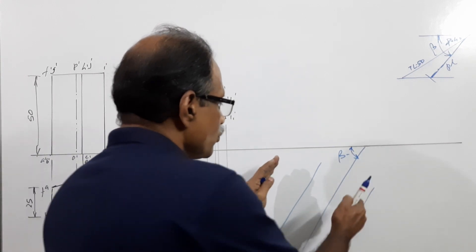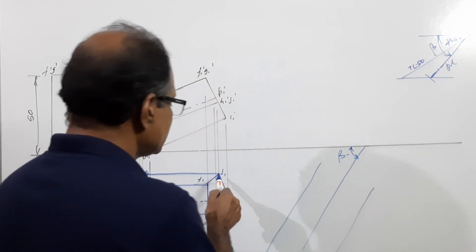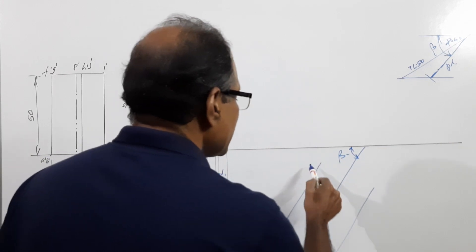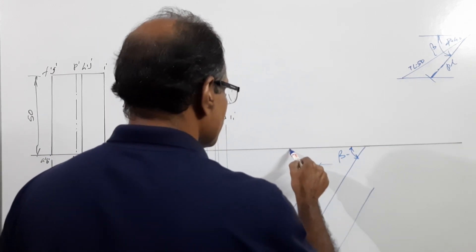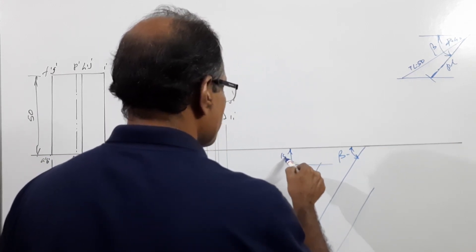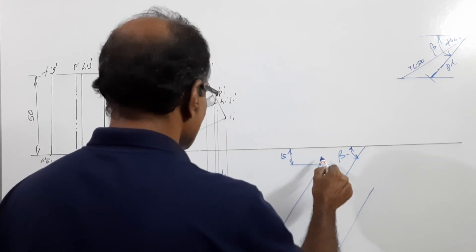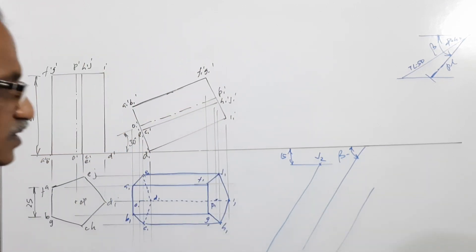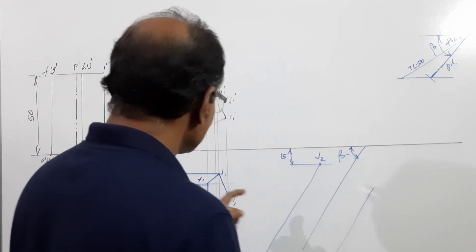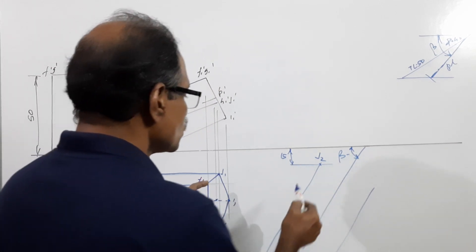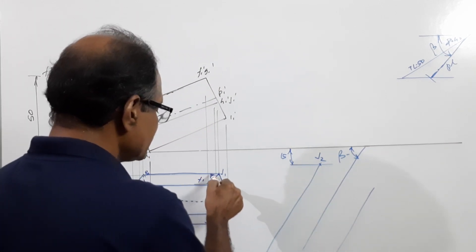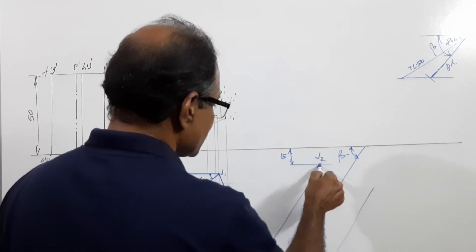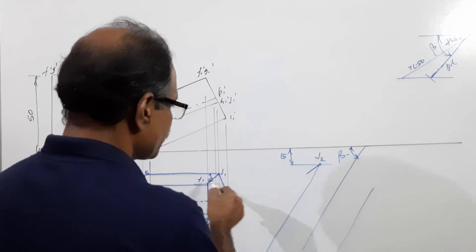When you move it like this, corner J is going to be nearer to the XY line. So draw a horizontal line 15 mm below — that is J2. With J2 as the reference, measure this angle and draw a line of this length.